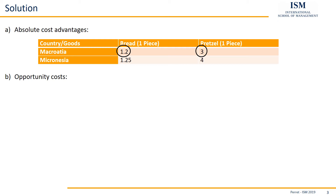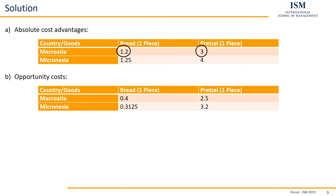To calculate the opportunity cost for bread in Macroasia, we divide the 1.2 cost for bread by the 3 for pretzels, giving us 0.4.